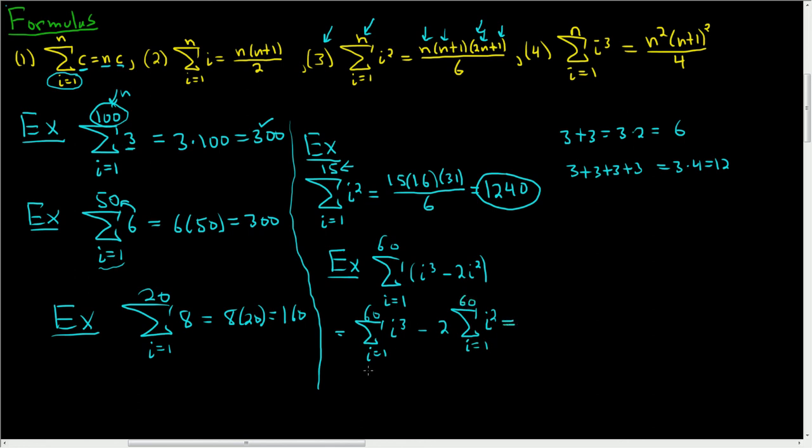So for this first one here, we're going to use formula 4. So it'll be 60 squared instead of n, and then 60 plus 1 is 61, so times 61 squared. Let me put that 60 in parentheses so it looks a little bit better. There we go.